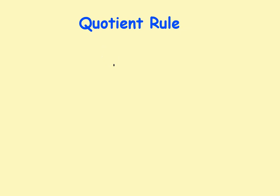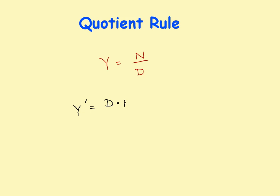Let's take a look at the quotient rule. If the original function is y equal to a numerator divided by a denominator, then the derivative using the quotient rule is: y prime equals the denominator times the derivative of the numerator, minus the numerator times the derivative of the denominator, all divided by the denominator squared.